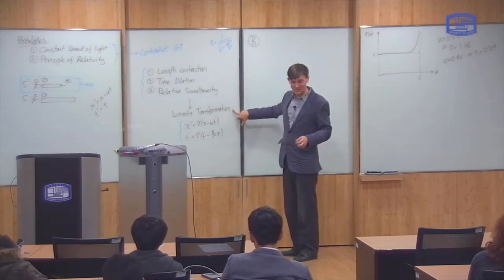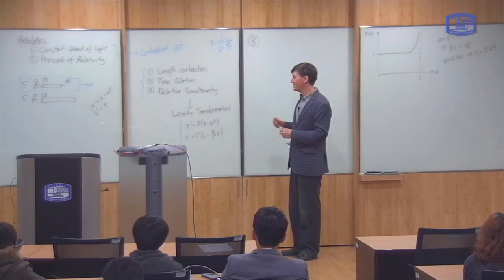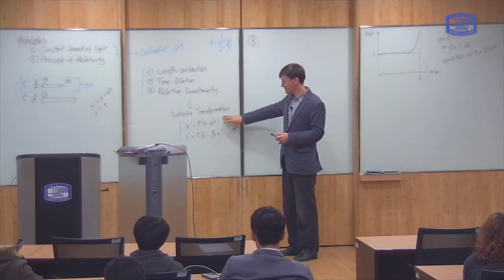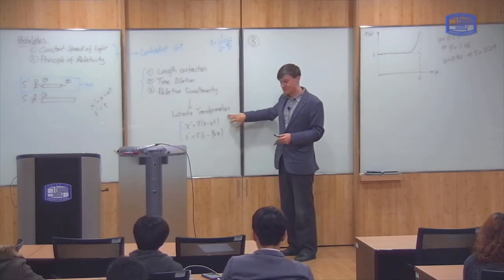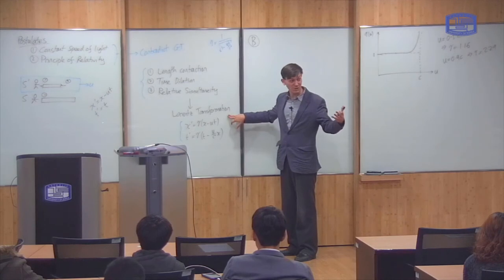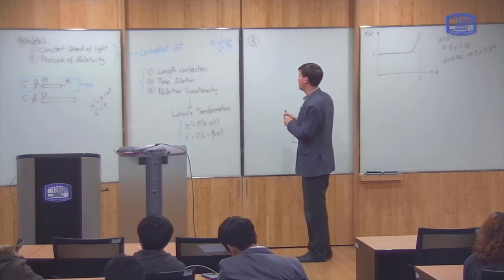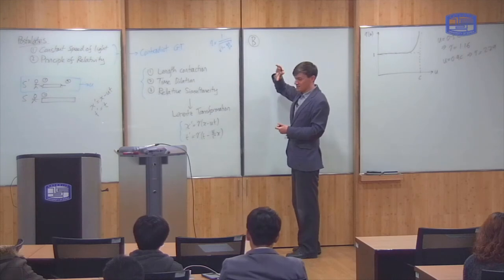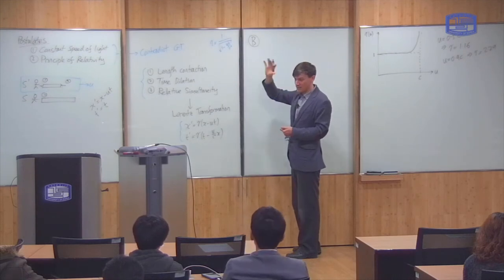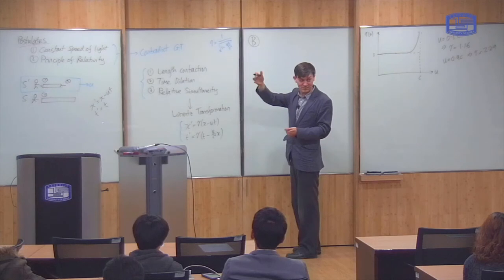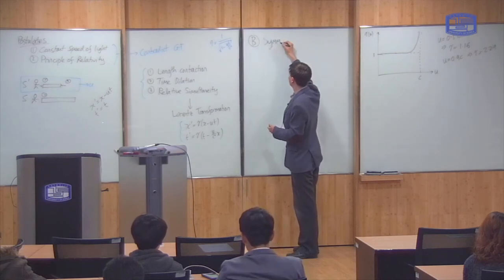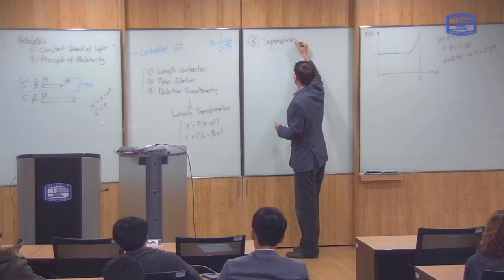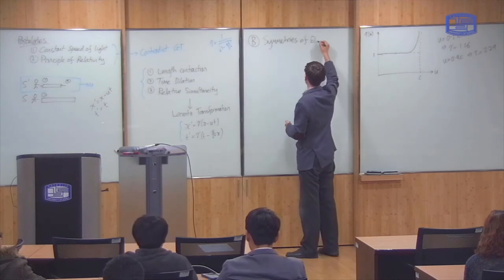So there is a reason for that, why this is named after Lorentz and not Einstein. And it's because Lorentz came up with these transformations first, but in a different context, in a different way. So I want to tell you what that is. So Lorentz was looking at the symmetries of the electric and magnetic forces, symmetries of electromagnetism.